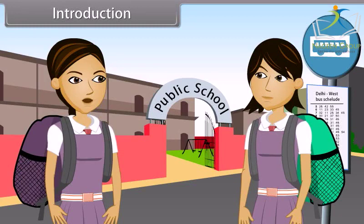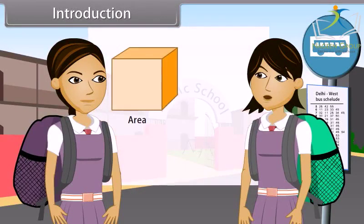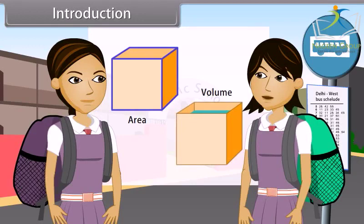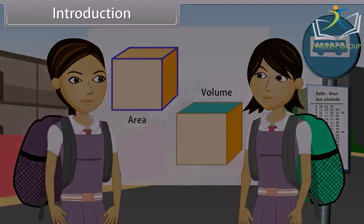I do not understand what you are saying. What is the surface area and the volume? Surface area is exactly what it sounds like — the area of all the outside surfaces of a three-dimensional object. And volume is all of the space inside a three-dimensional object. In this lesson, you will learn more about both of these concepts as well as how to compute the surface area and volume of a combination of solids.